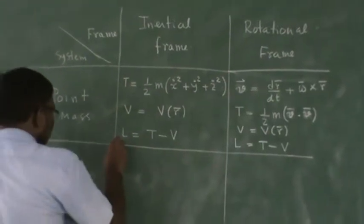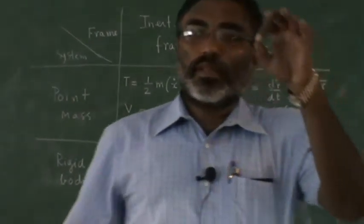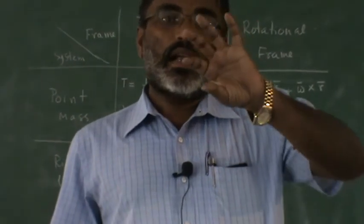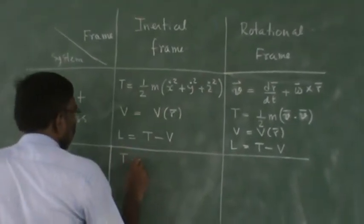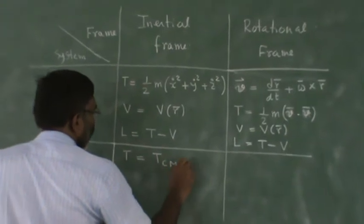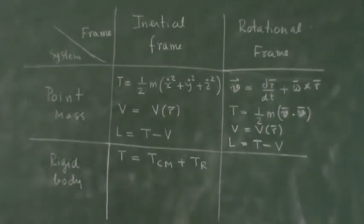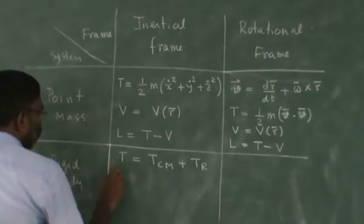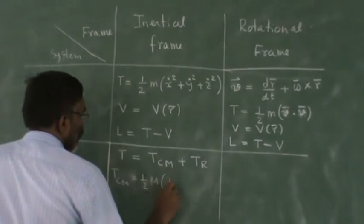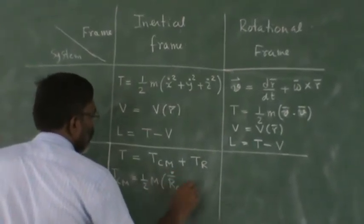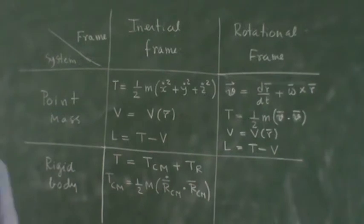Now if you have a rigid body, then I said that you decompose the motion in terms of the motion of the center of mass of the rigid body and rotational motion about the center of mass of the rigid body. So you can write out the kinetic energy as kinetic energy of the center of mass plus rotational energy. And kinetic energy of the center of mass is as usual half total mass of the system into R_CM dot dot R_CM, where R_CM is the position of the center of the system.